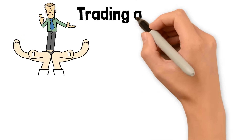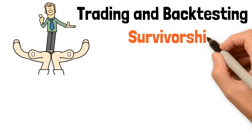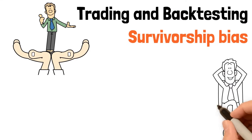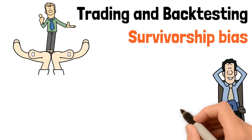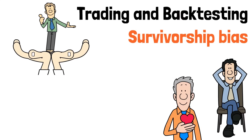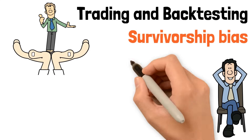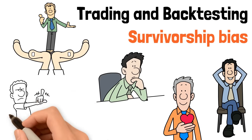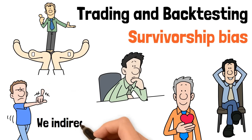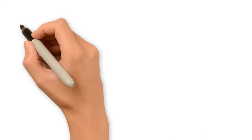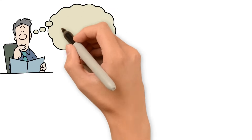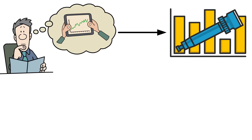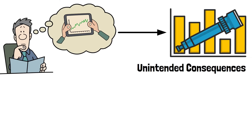Now let's relate this to trading and backtesting. Survivorship bias is all about the things we don't see or tend to ignore. We love hearing about super traders and success stories, but we tend to forget all those who tried but failed. These traders never make the headlines, so we indirectly ignore them. Trading decisions aren't just about tangible results — they also involve assessing alternative histories and unintended consequences.